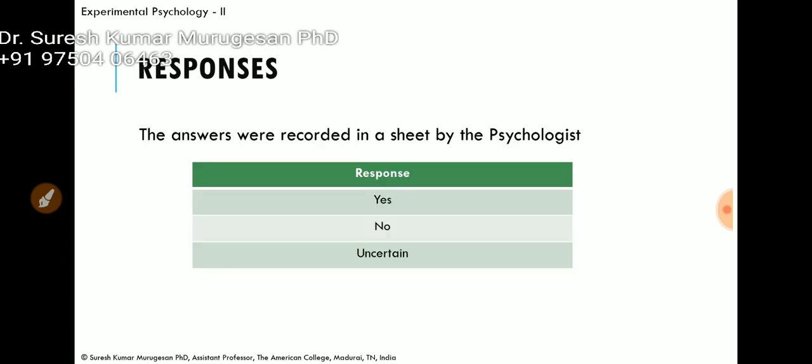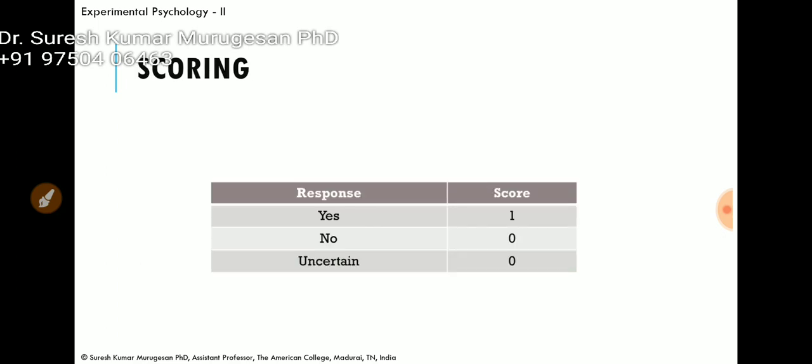There are three responses for each question: yes, no, and uncertain. For scoring, the right response which reflects adjustment receives a score of 1. For no and uncertain responses, a score of 0 is given.